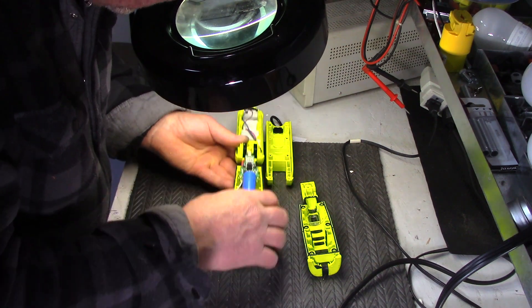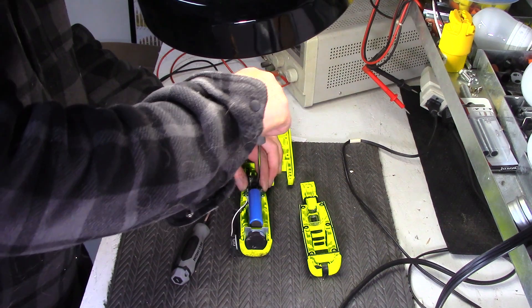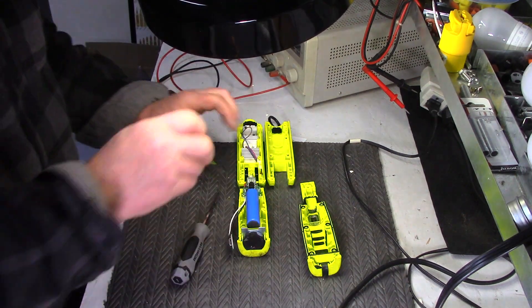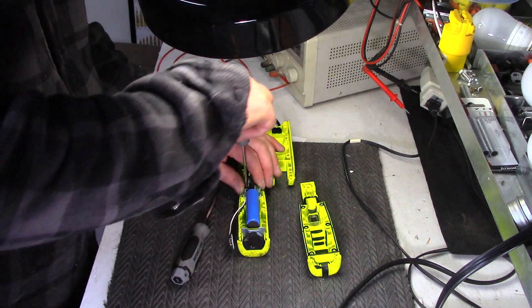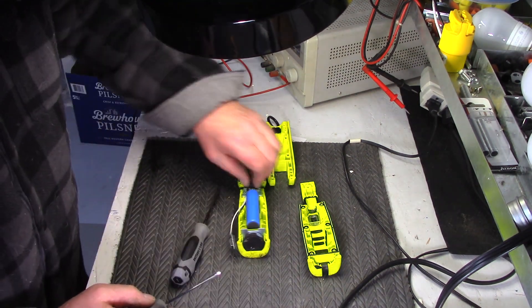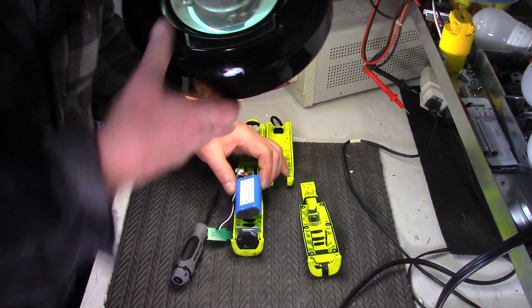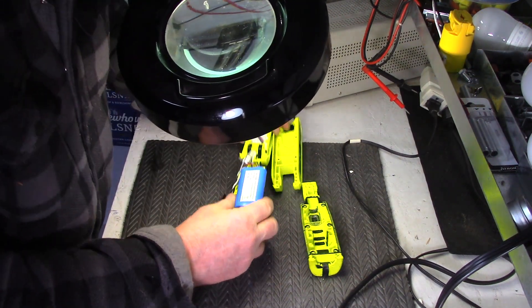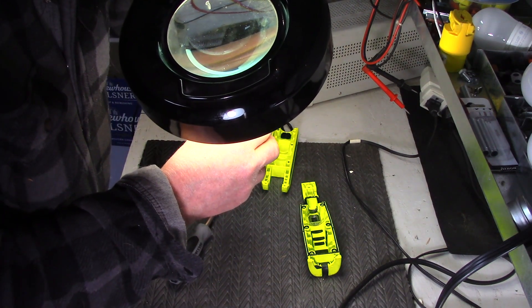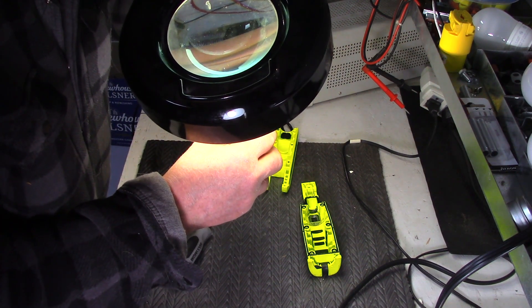Let's remove these two screws for the circuit board here. Those are shorter screws, so remember that. What does this tell me? Three point seven volts.